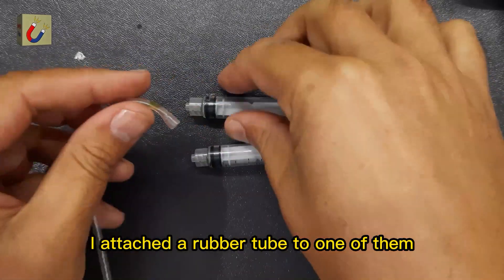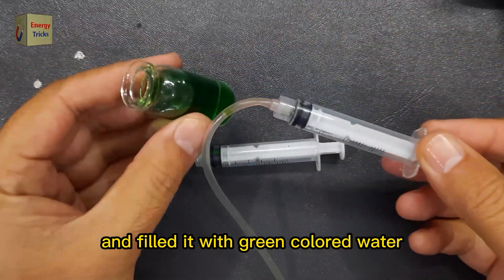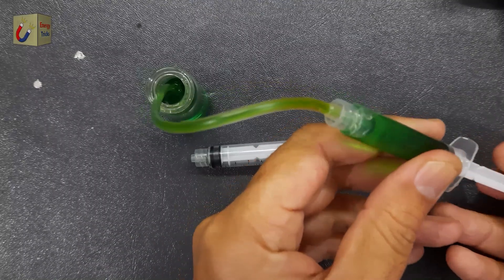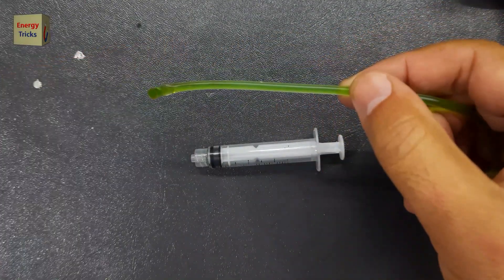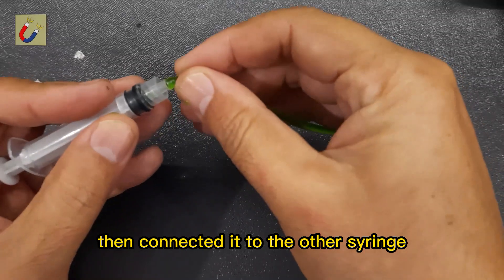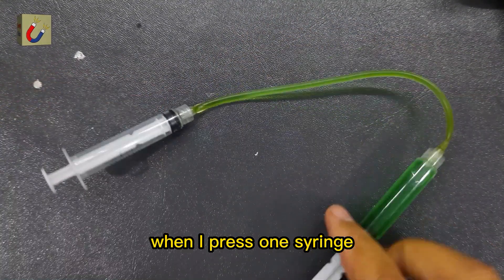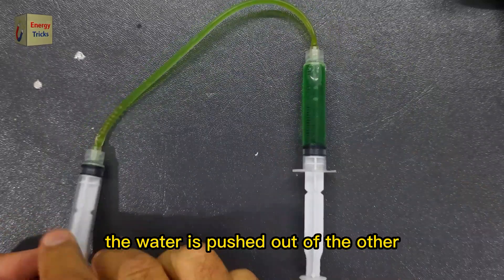These are two syringes. I attached a rubber tube to one of them and filled it with green-colored water, then connected it to the other syringe. When I press one syringe, the water is pushed out of the other.